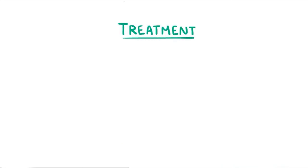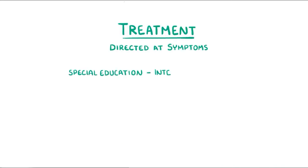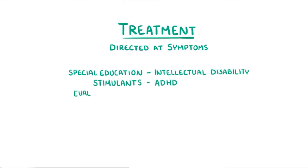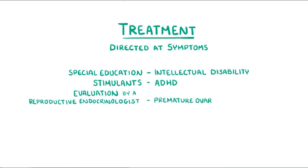Treatment of Fragile X is directed at individual symptoms — for example, special education for intellectual disability, stimulants for ADHD, and evaluation by a reproductive endocrinologist for premature ovarian insufficiency.